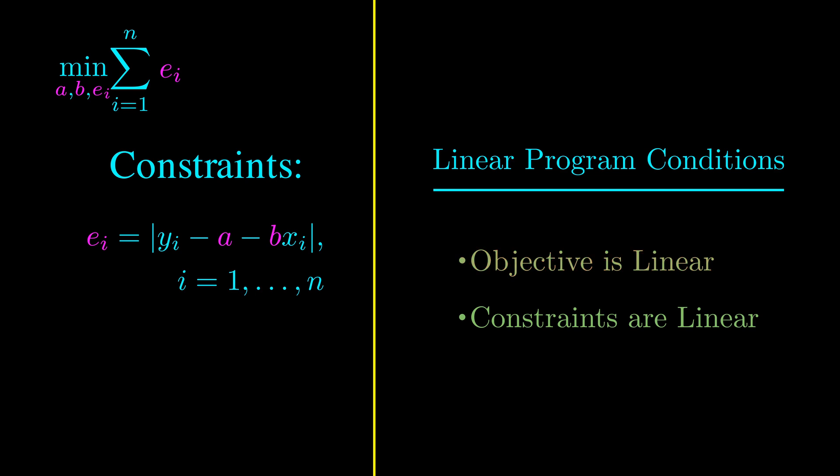Although the objective is now linear, the absolute value signs move to the constraints, making it non-linear. To deal with this, we can first change the equality into a greater than or equal to sign. The optimal solution is unchanged. This is because we are minimizing the sum of ei, so at optimality, the constraint will be at equality.